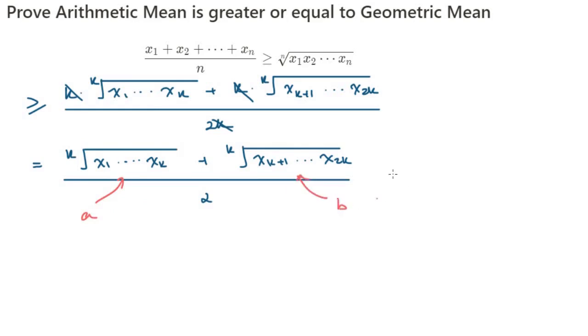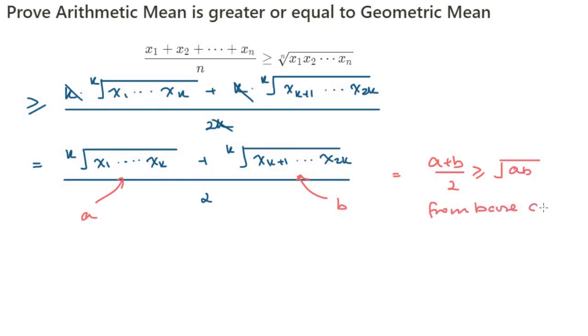And we notice this is of the form (a + b)/2 ≥ √(ab) with just two terms, which we've established as true from our initial case.